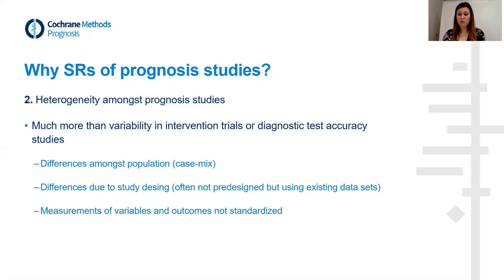Systematic reviews are written to give an overview of all the information, but also to assess quality — that is, the certainty of the included evidence. For prognosis studies, there is a lot of heterogeneity among these studies, and there is even more variability in prognosis studies than in intervention studies such as randomized controlled trials, which have very strict pre-designed study designs, or in diagnostic test accuracy studies.